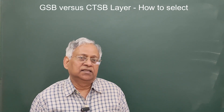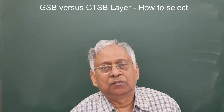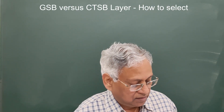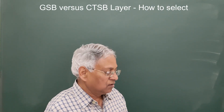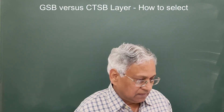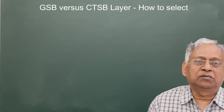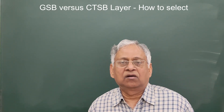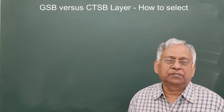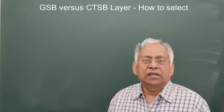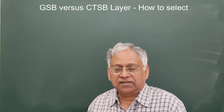First, what is GSB? It is a layer of natural sand, mooram, gravel, crushed stone, riverbed material, or a combination of these. These materials or aggregates should meet the specifications of grading and physical requirements as per Table 400-1 of MoRT&H specifications.